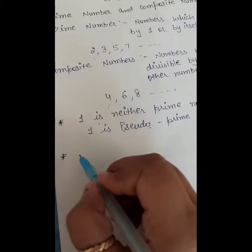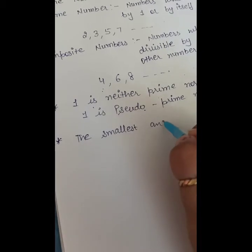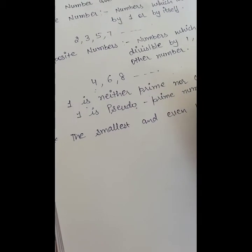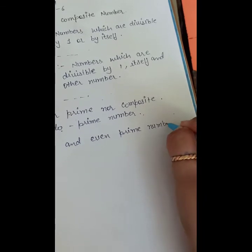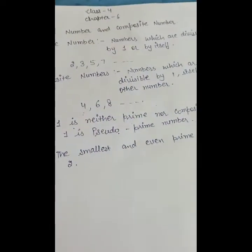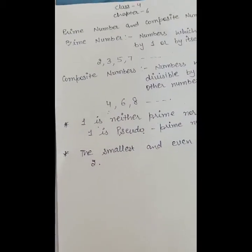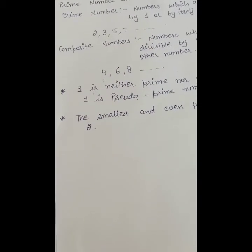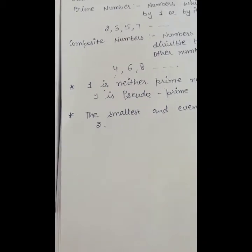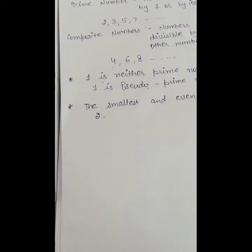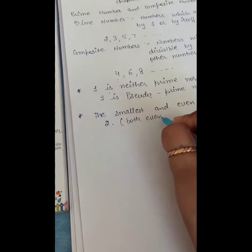The next point is: the smallest prime number and the only even prime number is 2. You have to remember this. The smallest prime number is 2, and the even prime number is also 2. And 2 is the only number in counting that is both even and prime.